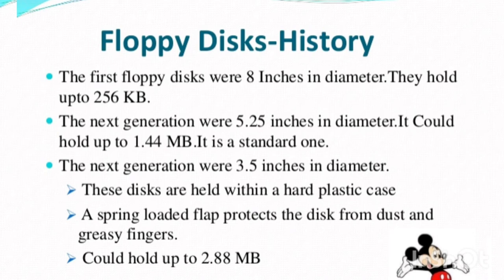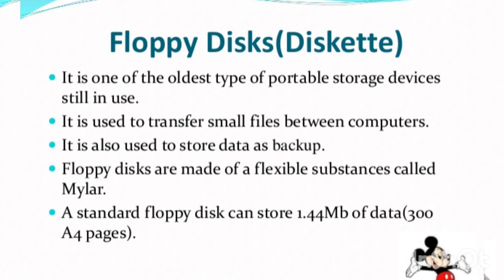The next — third generation — of floppy disk is 3.5 inches. This floppy disk core is held within a plastic case for protection; this disc is very protective under this plastic case. The third generation of floppy disk can hold a space of 2.88 MB. This floppy disk is one of the oldest types of portable storage devices and is still in use, though many new inventions have come along.